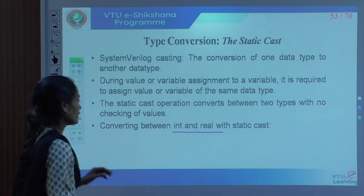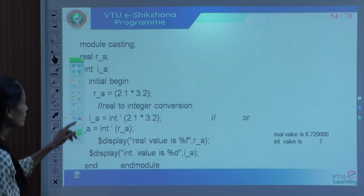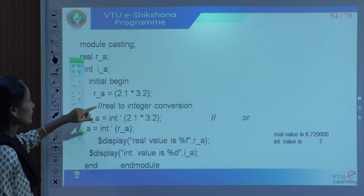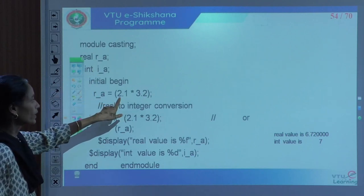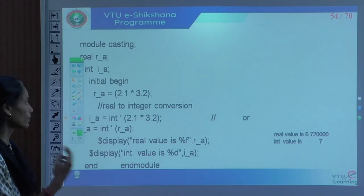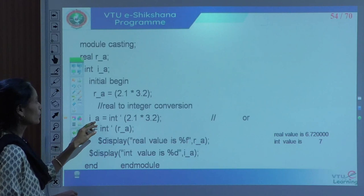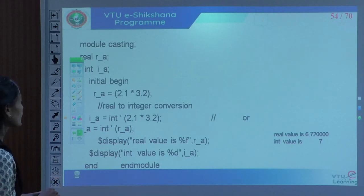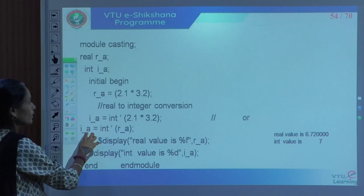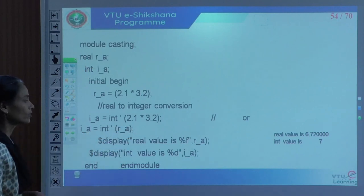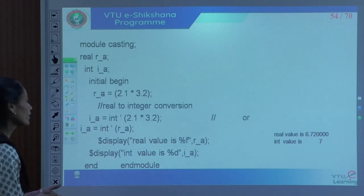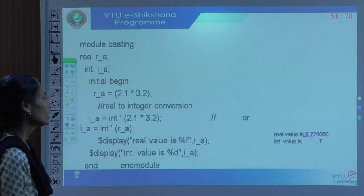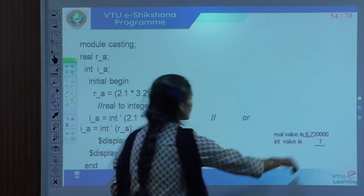For static cast, consider int and real: we declare real r_a and integer i_a. If the real value is 2.1 multiplied by 3.2, the multiplication happens with real numbers giving 6.7200. For the integer version using type conversion — int'(r_a) — it will round off to 7. There is a type conversion we can make use of to convert data types from real to int, or other data types can be converted to each other.